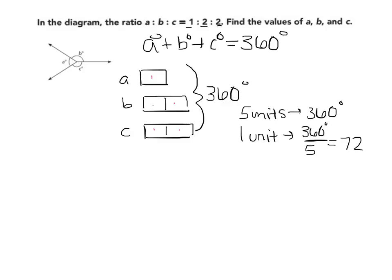I know that A has to equal 72 because it's one unit. B is two units, so I have to take two times 72 to get 144. And C is also two units, so I will also have to multiply that by 72 twice to get 144 degrees.